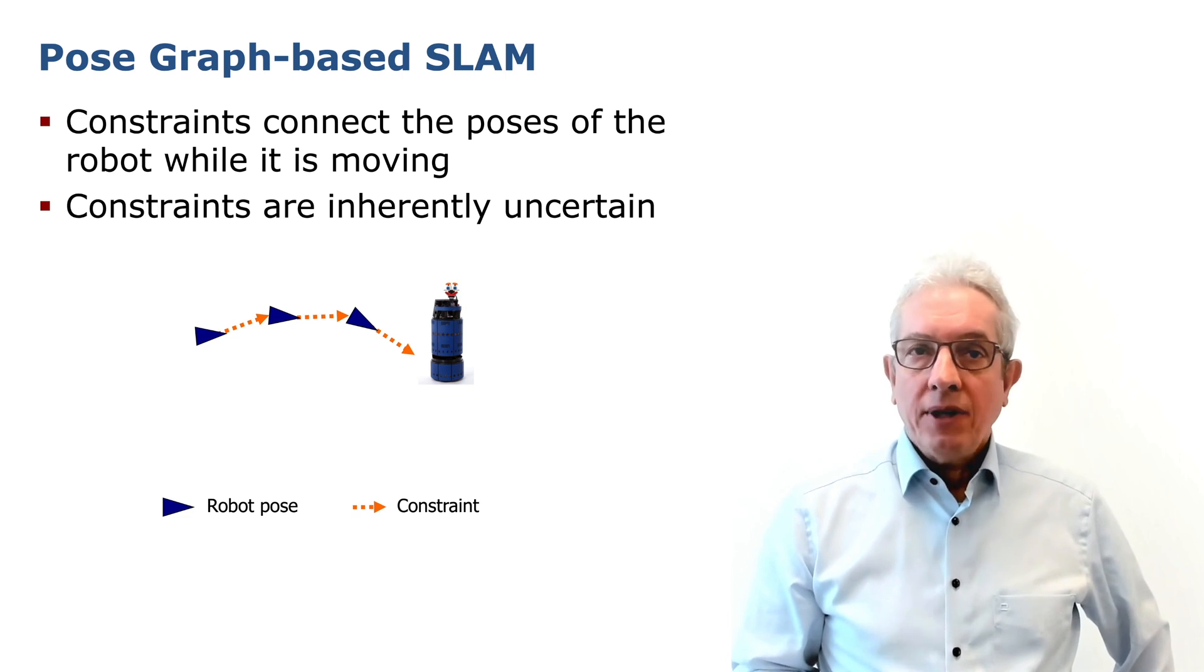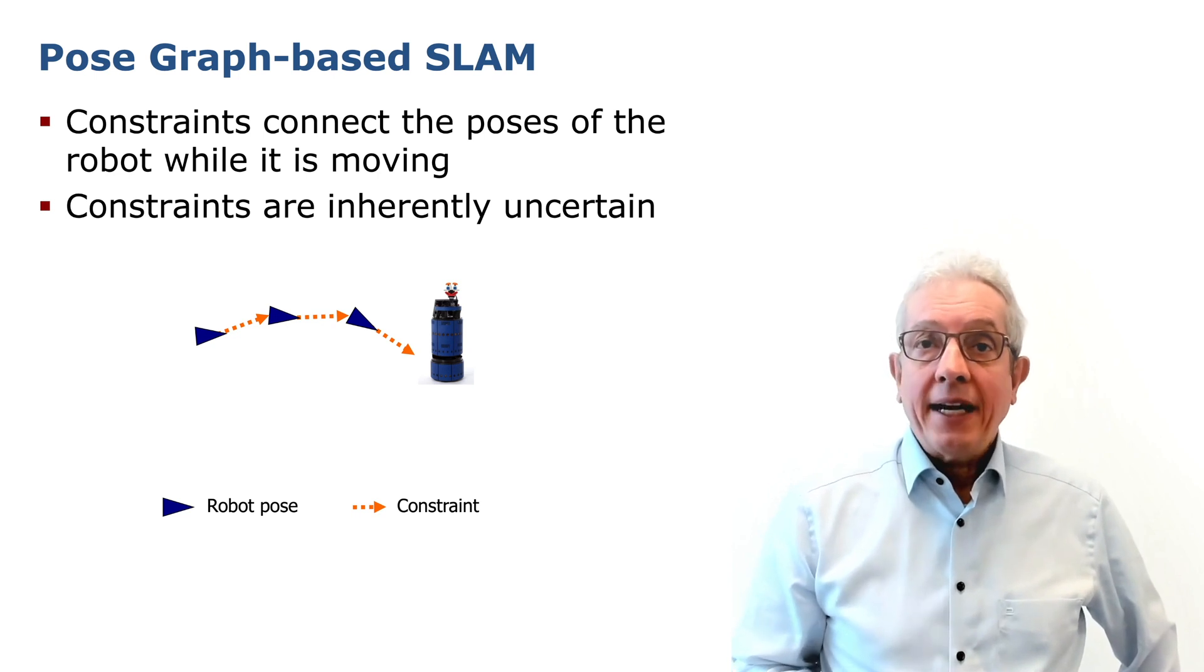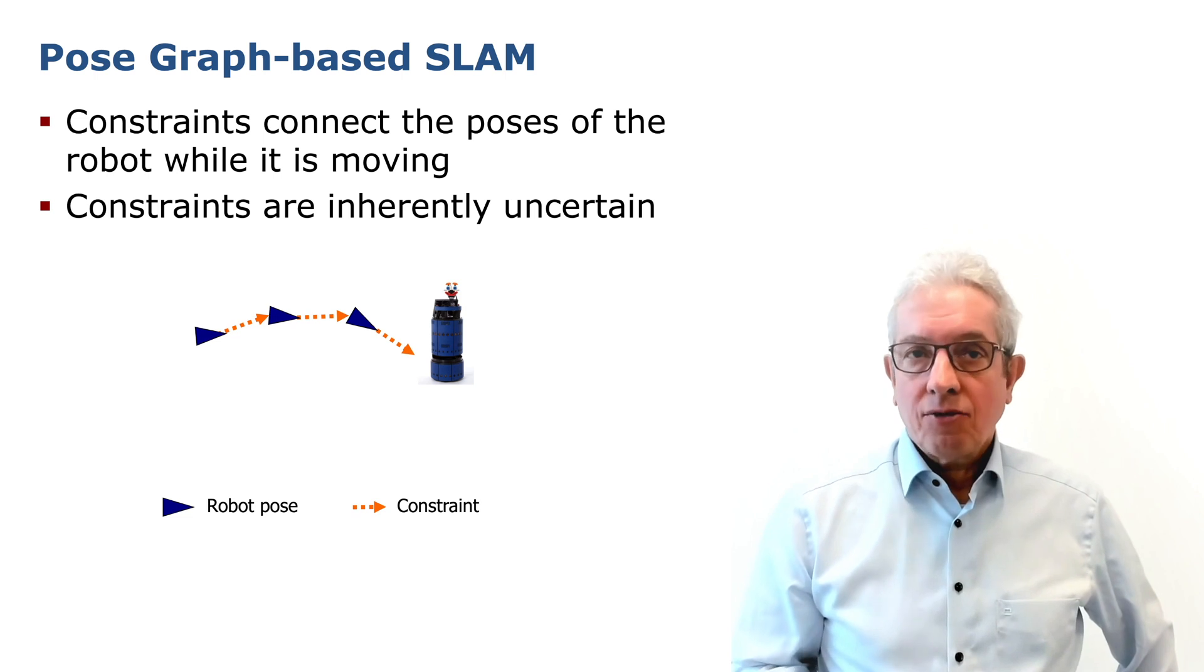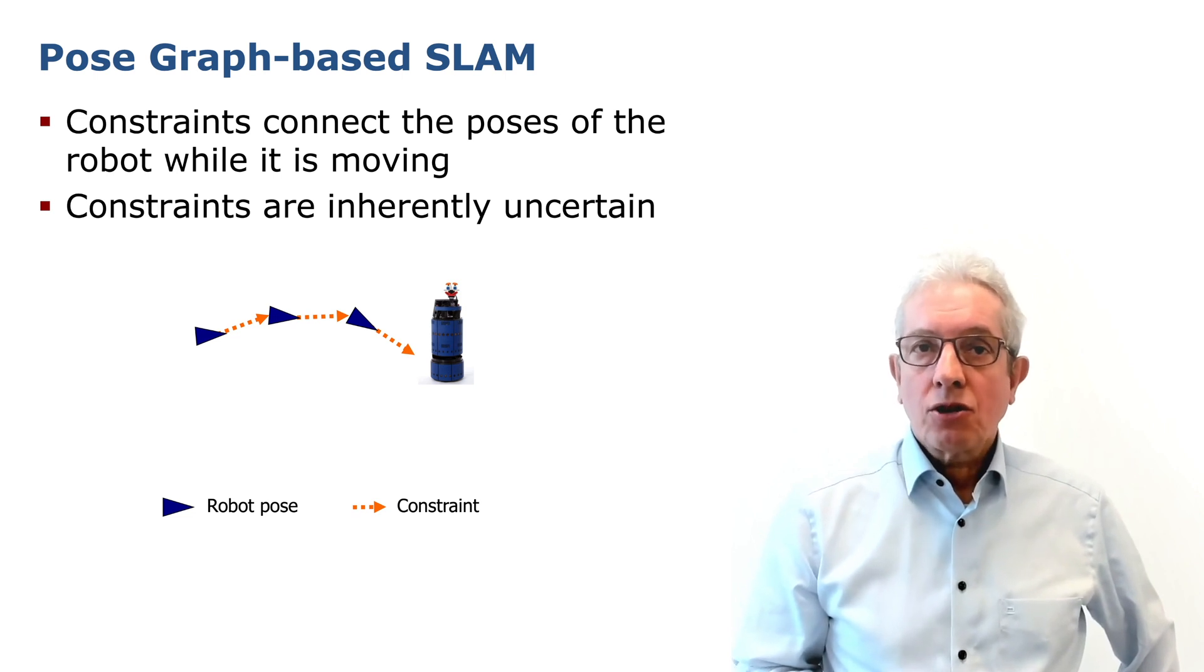And in this pose graph, as in every graph, we have nodes and edges. Whenever the robot moves, we basically create nodes of the individual positions recorded at discrete points in time. The movements between these nodes correspond to edges that are so-called constraints between the nodes. They basically tell us what the relative pose of these two nodes should be. Obviously, because these are measurements, they are inherently uncertain.